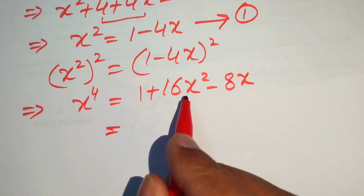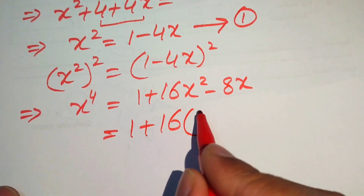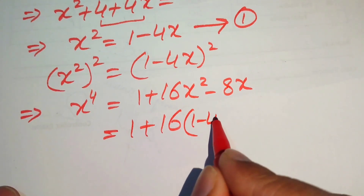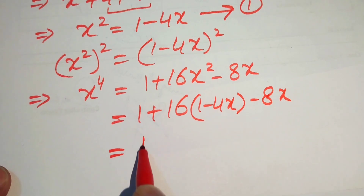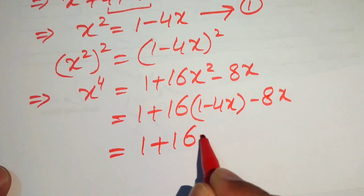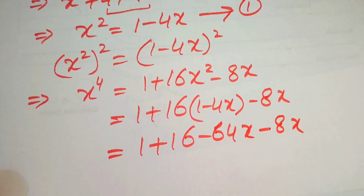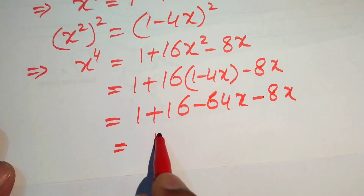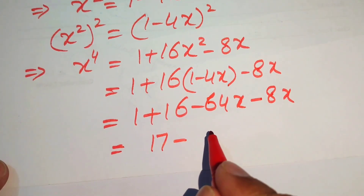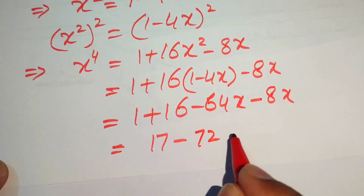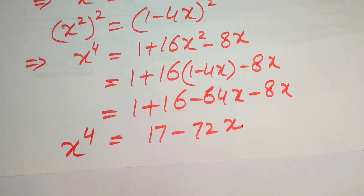We back-substitute x² = 1 − 4x into the expression for x⁴: x⁴ = 1 + 16(1 − 4x) − 8x = 1 + 16 − 64x − 8x = 17 − 72x. This is the value of x to the power of 4.